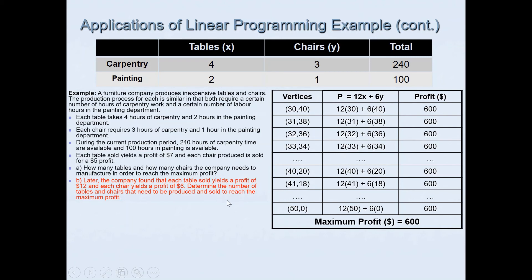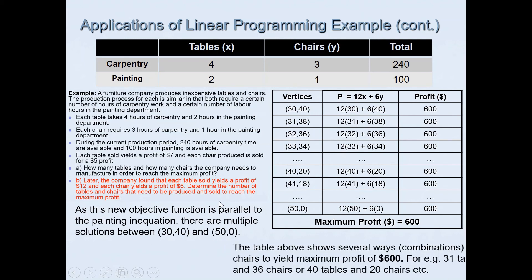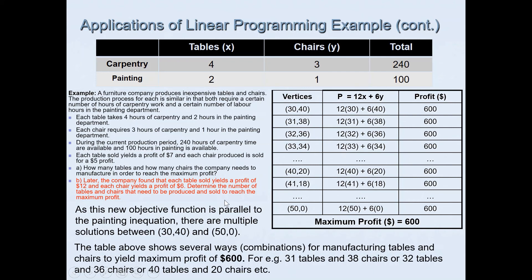Once the table is filled in, write an explanation: as this new objective function is parallel to the painting constraint, there are multiple solutions between the points (30, 40) and (50, 0). The table shows several combinations for manufacturing tables and chairs to yield a maximum profit of $600 — for example, 31 tables and 38 chairs, 32 tables and 36 chairs, or 40 tables and 22 chairs will each yield a maximum profit of $600.